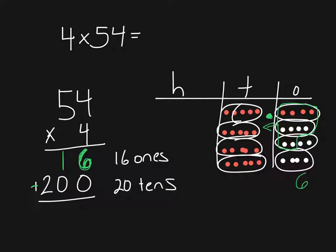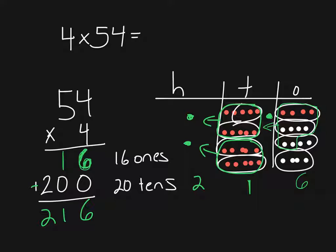I'm going to regroup my tens. I take a bundle of ten and that gets regrouped into my hundreds, and another bundle of ten gets regrouped into my hundreds. So what I'm left with are two hundreds, one ten, and six ones. And if I add these up — my two hundreds and my sixteen ones — I end up with the same answer: two hundred sixteen.